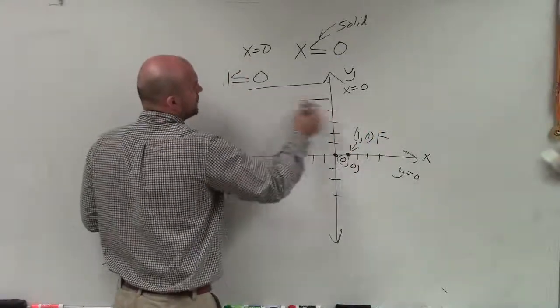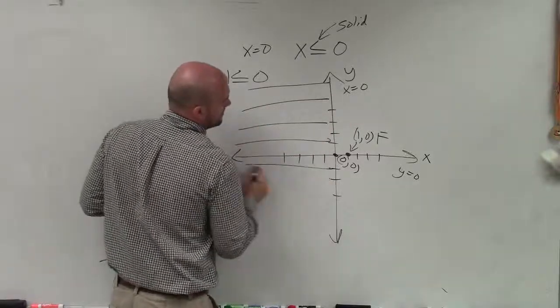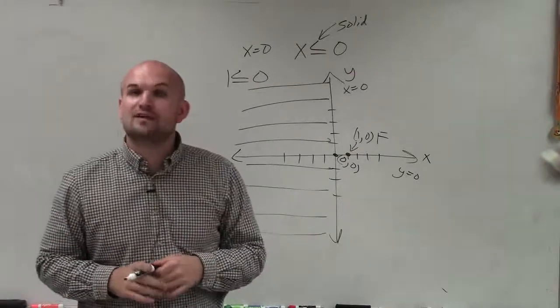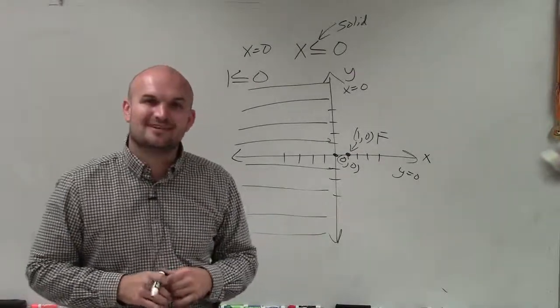So therefore, all the points to the left are going to be true. So there we go, ladies and gentlemen. That is how you graph a vertical linear inequality. Thanks.